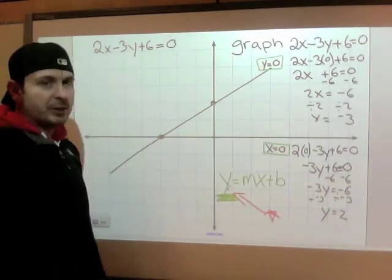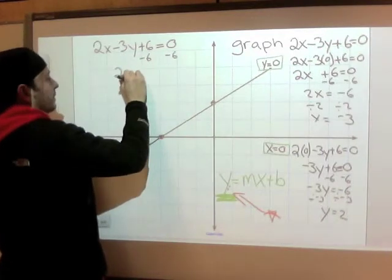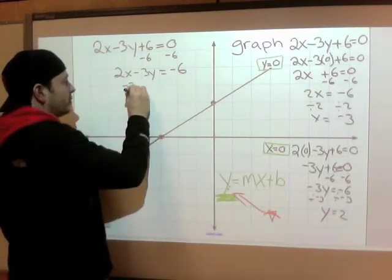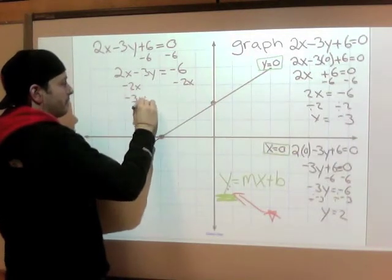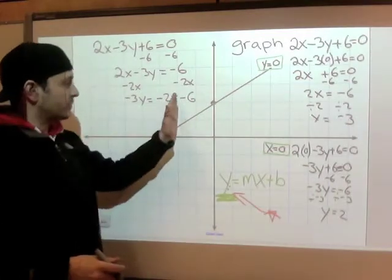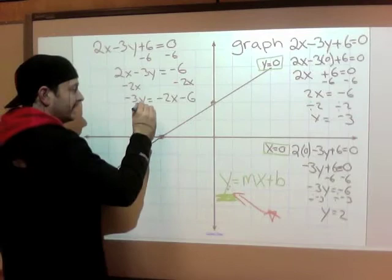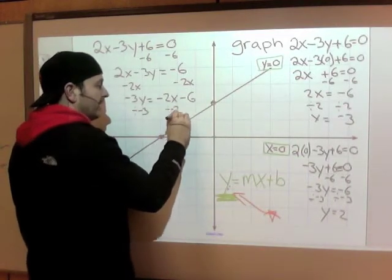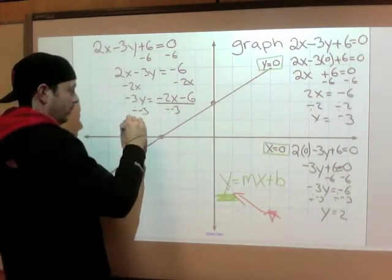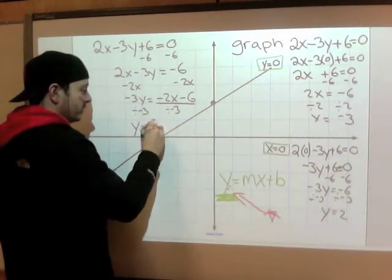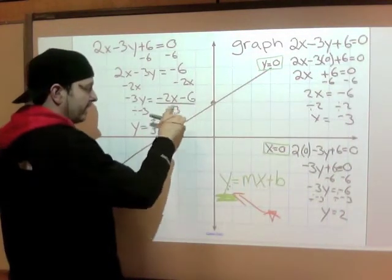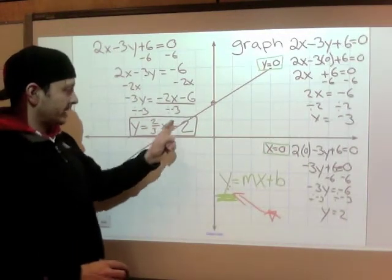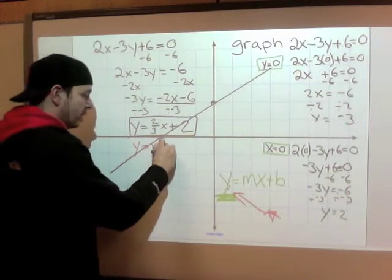The key to slope-intercept form is that the y is by itself — that's the form we like to graph from. So to get this into slope-intercept form, get the y alone. I'm going to move all my other parts to the other side — subtract 6 from both sides. Now it's in standard form; I still need to get that y alone. So subtract 2x from both sides — always go letters first, then numbers. I need this y alone. This is negative 3 times y, so I'll do the opposite and divide by negative 3, doing that to the whole piece. We get y equals negative 2 over negative 3, which is 2 thirds x, then negative 6 over negative 3 — negative negative is positive, 6 divided by 3 is 2. My equation is y equals 2 thirds x plus 2.